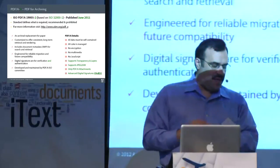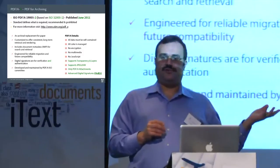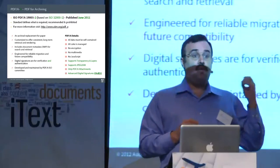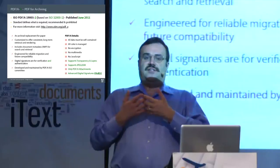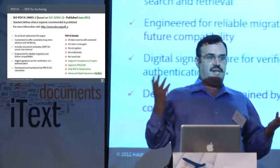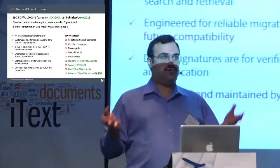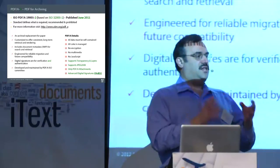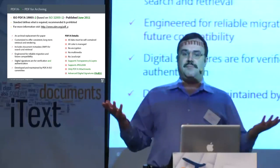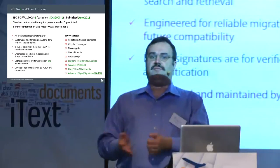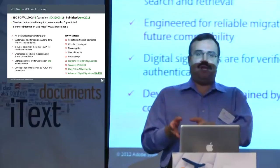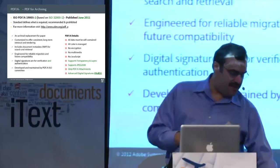PDF/A-2 adds support for new features: transparency, optional content, and attachments. One of the big changes is that PDF/A-2 is now aligned with the European digital signature standard called PAdES — PDF Advanced Electronic Signatures. This means every digitally signed PDF/A-2 file is compliant with PAdES. You sign this document and you're compliant with EU standards. Really significant advancement in both PDF and digital signatures.